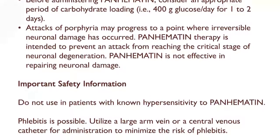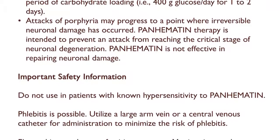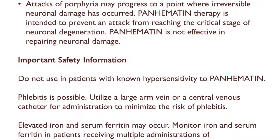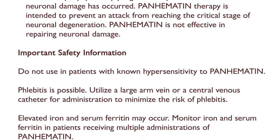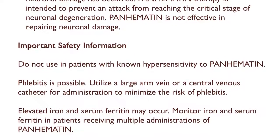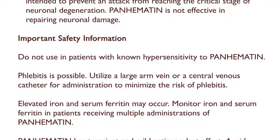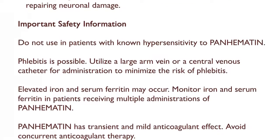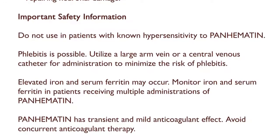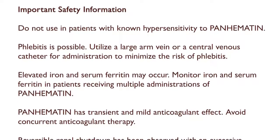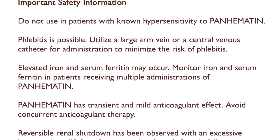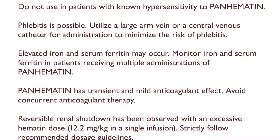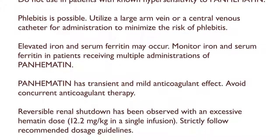Important safety information: Do not use in patients with known hypersensitivity to Panhematin. Phlebitis is possible — utilize a large arm vein or a central venous catheter to minimize the risk. Elevated iron and serum ferritin may occur; monitor in patients receiving multiple administrations. Panhematin has a transient and mild anticoagulant effect — avoid concurrent anticoagulant therapy. Reversible renal shutdown has been observed with an excessive hematin dose of 12.2 mg per kg in a single infusion — strictly follow recommended dosage guidelines.